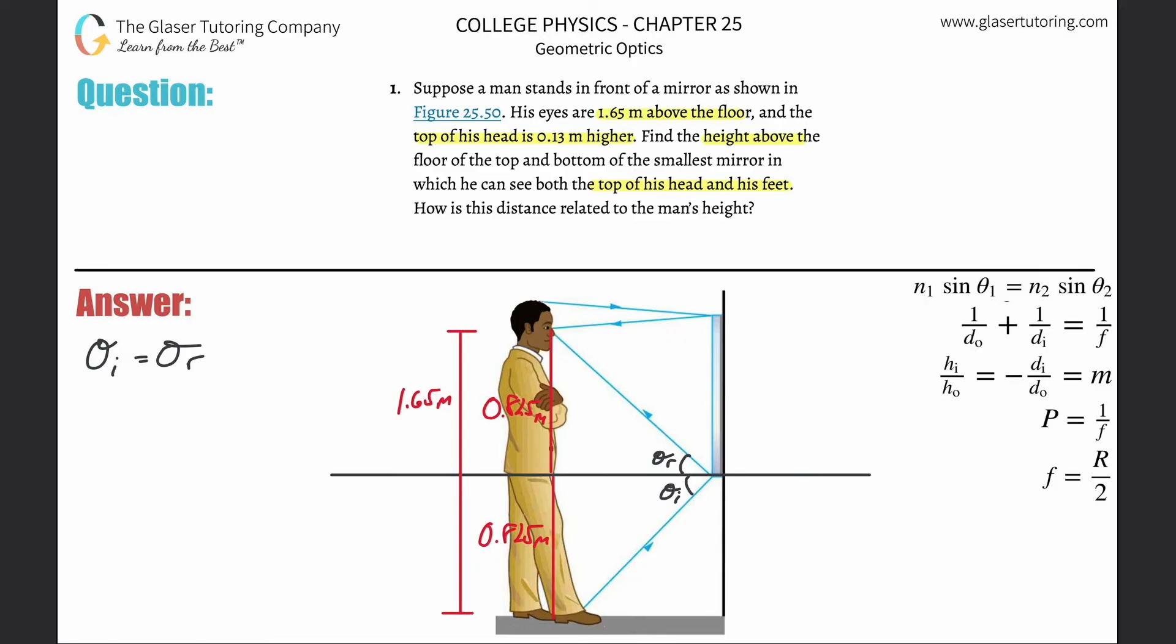Now what about this reflection up at the top? Well, the same principles apply. In order for the man to see the top of his head, the light reflecting off the top of his head must travel to the top of the mirror and then reflect back into his eyes. We have the same principles that apply: the angle of incidence will equal the angle of reflection, and therefore this distance here must equal the distance there.